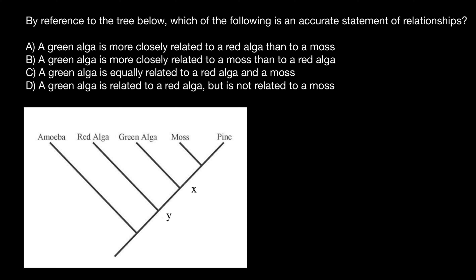That last variant is not true. We can exclude it because it is obvious that green alga and moss have a recent common ancestor, so they are related. It is also very tempting to choose variant C — that a green alga is equally related to a red alga and moss because it is exactly in the middle. But let's compare the length of these branches.